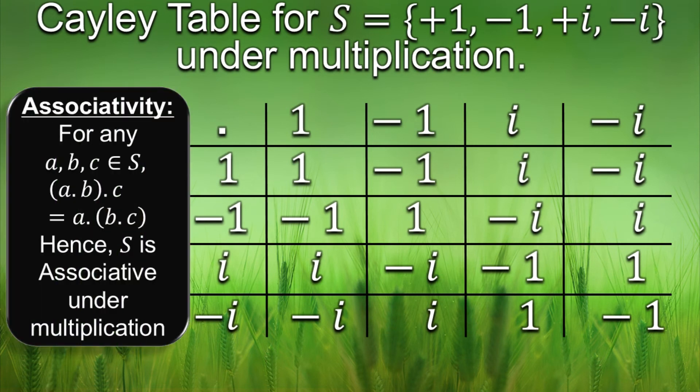Next property is associativity. As we can see from the Cayley table that the elements of the set S give the same answer no matter how we group them by placing the parentheses around them. And also we know that the binary operations addition and multiplication are associative for real and complex numbers both, so that's a given. And hence we can say S is associative under multiplication.